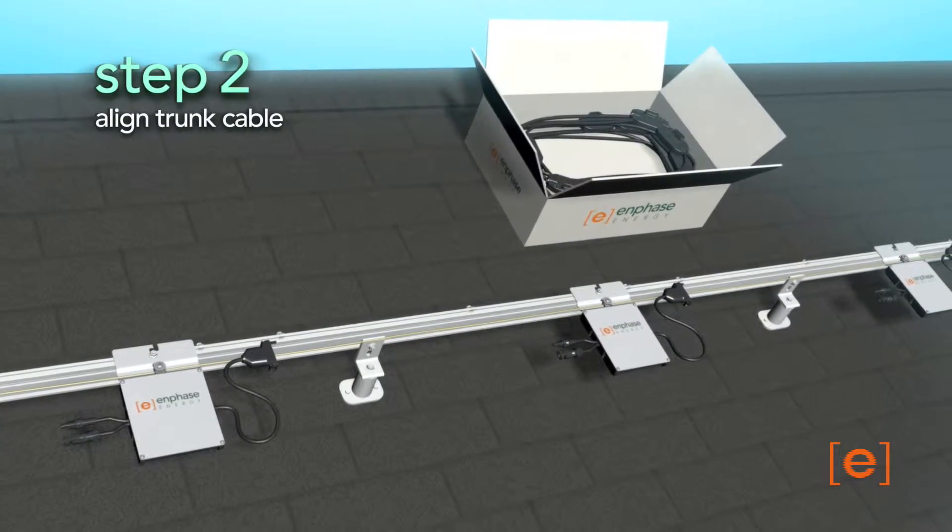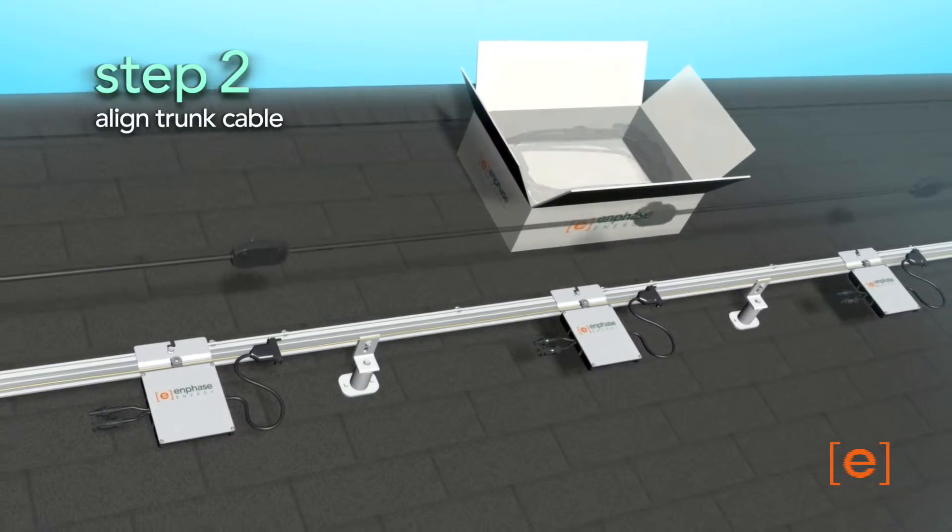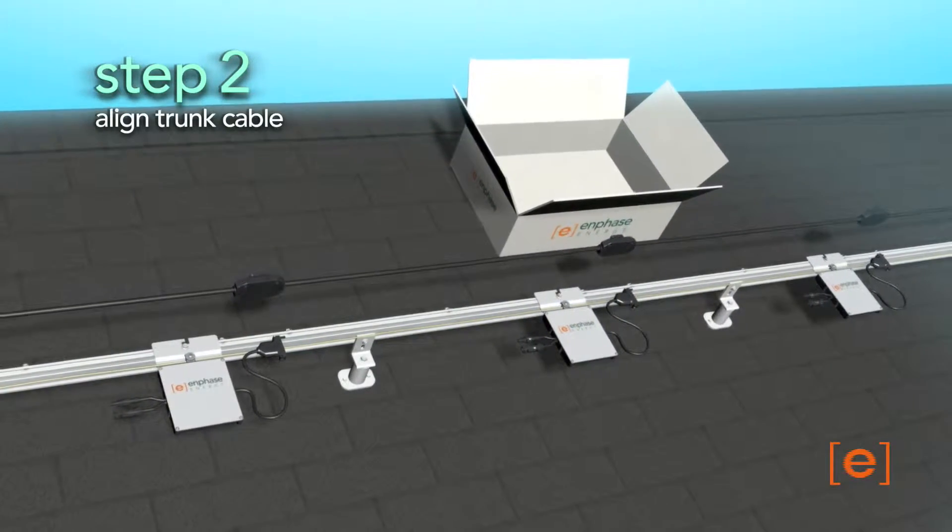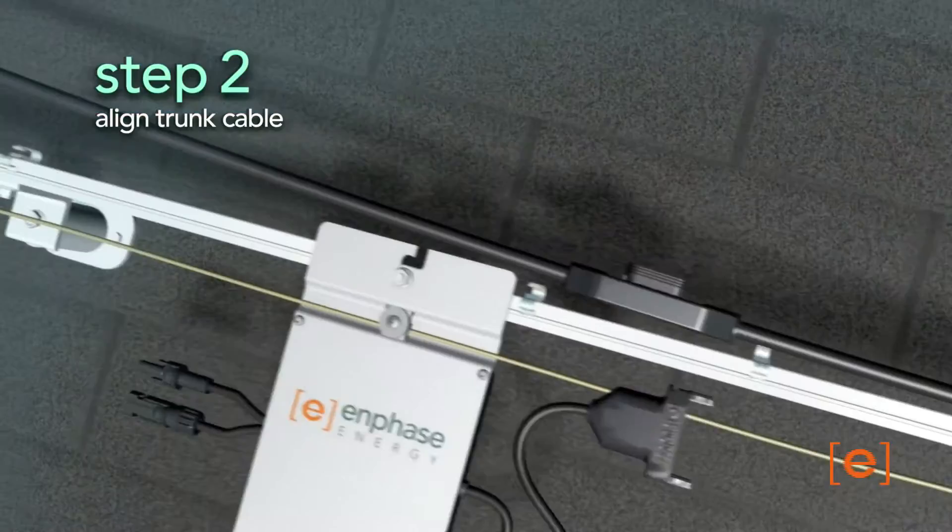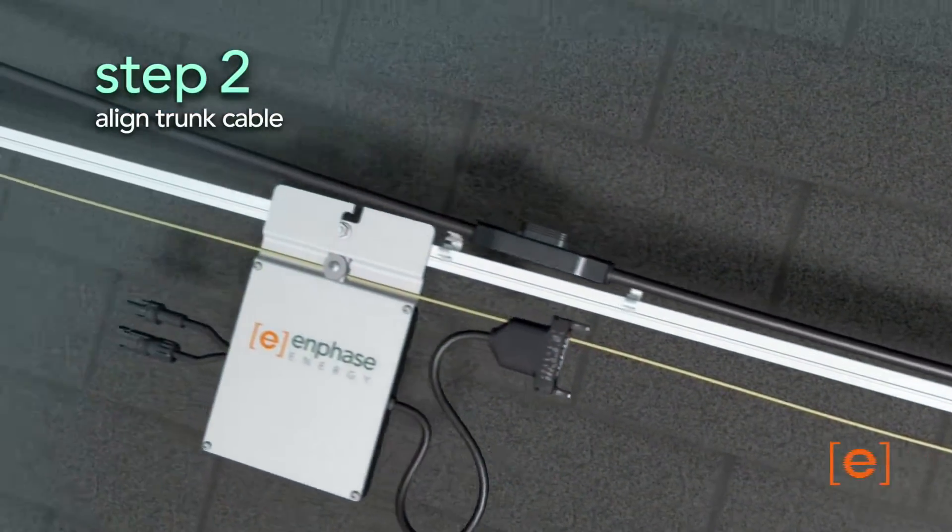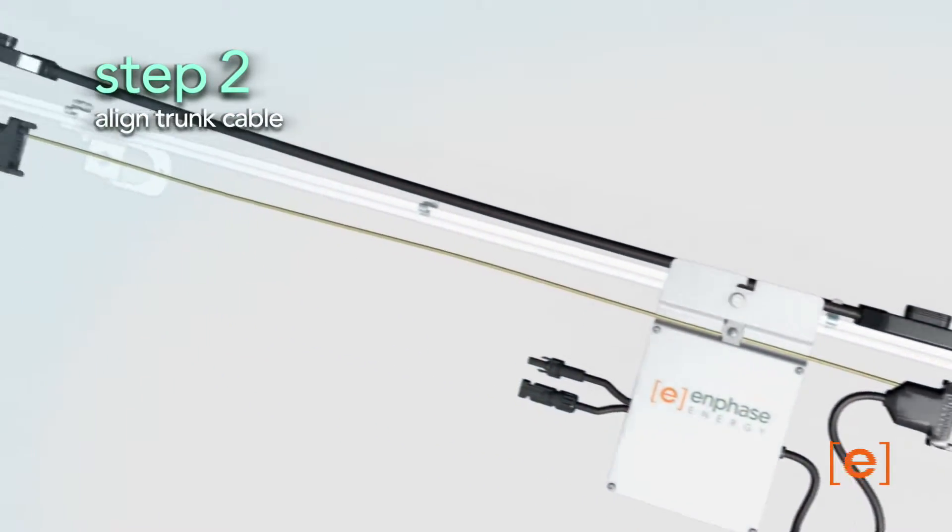lay out the trunk cable in the location required, with the trunk connectors aligned to the location of the microinverters. The cable can be placed on either side of the racking and may be secured with tie wraps or clips.